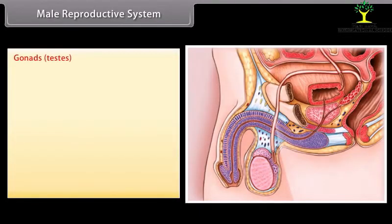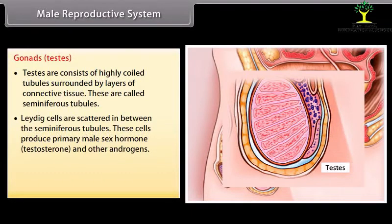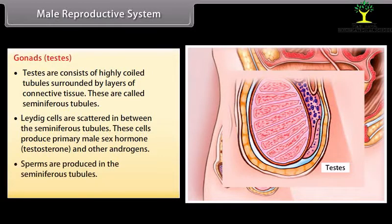The testes consist of highly coiled tubules surrounded by layers of connective tissue, called seminiferous tubules. Leydig cells are scattered in between the seminiferous tubules; these cells produce the primary male sex hormone testosterone and other androgens. Sperm are produced in the seminiferous tubules.